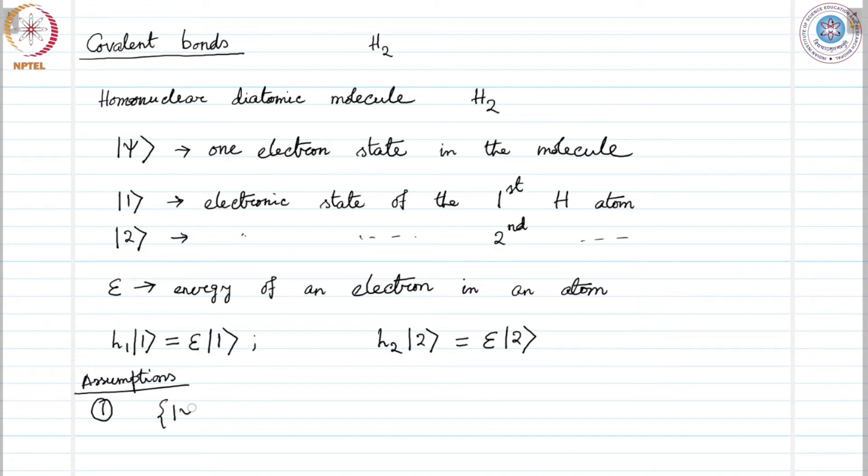That means this set of one and two gives us an adequate basis set. This is our first assumption.